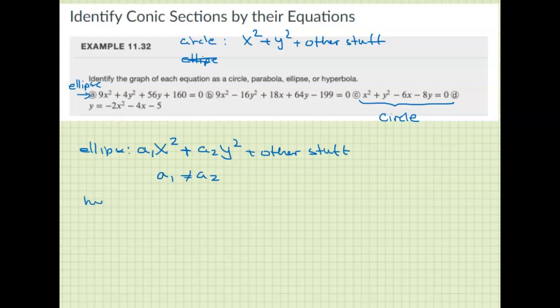A hyperbola will have a1 x squared minus a2 y squared plus other stuff, or you could have the y squared comes first: a2 y squared minus a1 x squared plus other stuff. You have to have both x squared and y squared with minus in between.